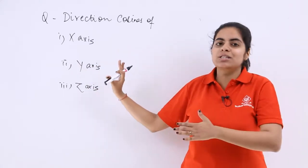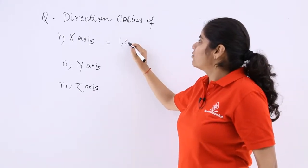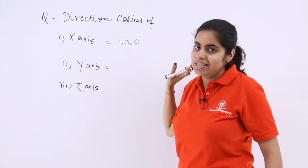I have just included this question in order to brush up and revise that the direction cosines of x axis are 1, 0, 0 because we are talking only of x so it will be 1, y, z will be 0.